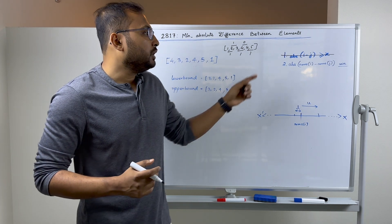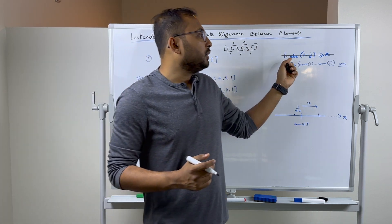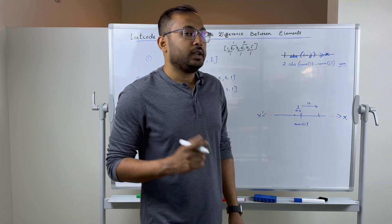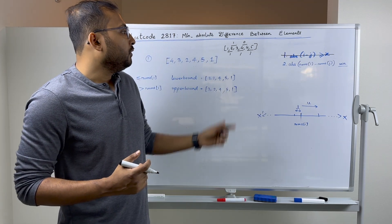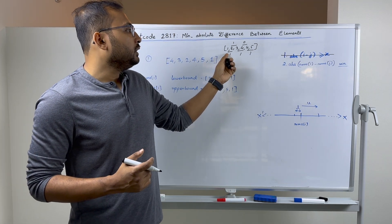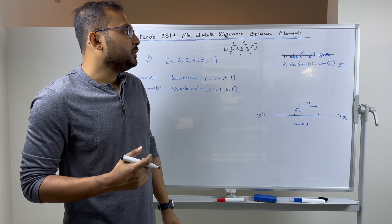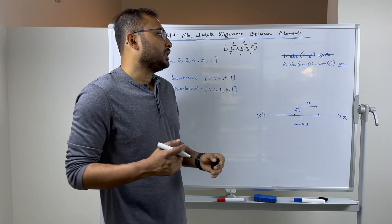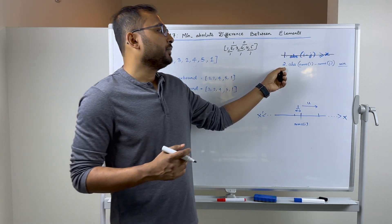But if we add the index constraint back — the absolute difference of the indices has to be at least x — once we sort, the ordering changes. So that means we have to think of something else, some other way of solving this problem.